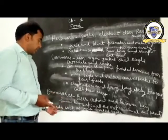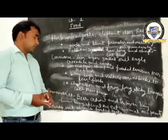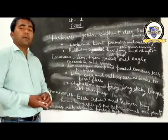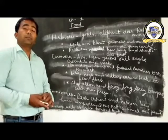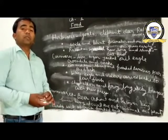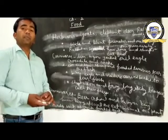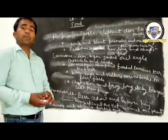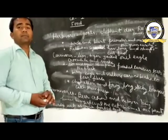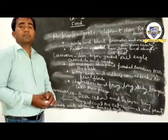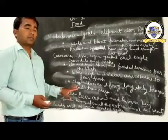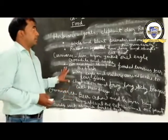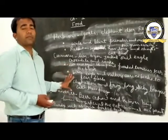Birds such as crow have a pointed beak, and with the help of their beak they catch their prey. That concludes our look at chapter one.